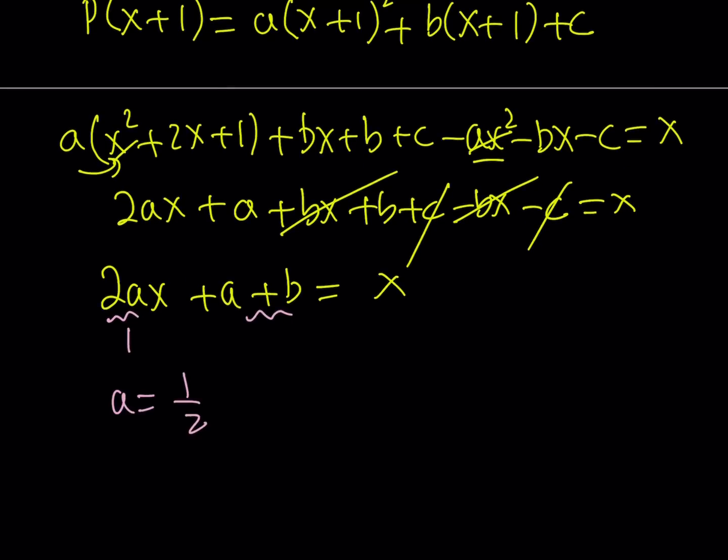And A plus B. Now, there is no constant on the right-hand side. Therefore, A plus B needs to be 0, which indicates that B equals negative 1 half. So we were able to find the values of A and B.